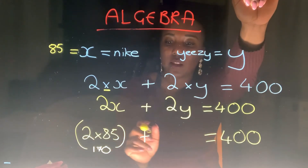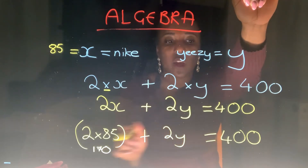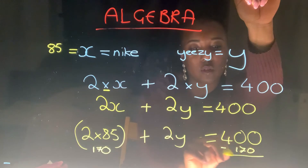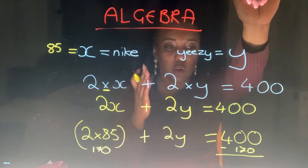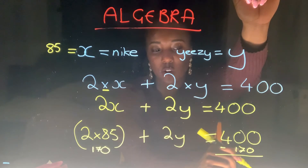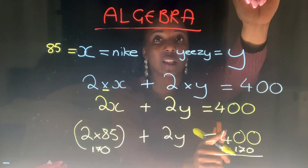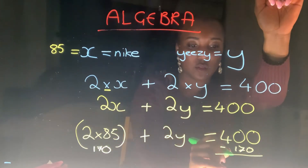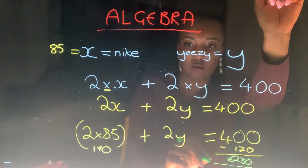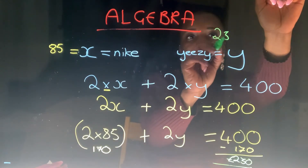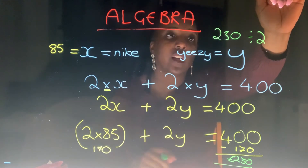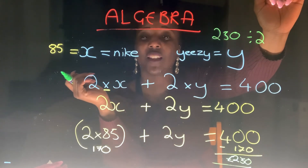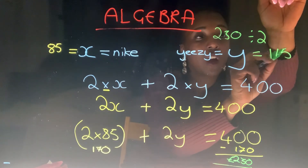And then I've got 2Y over here. So if I take 400 take away 170, what am I left with? 100 away from 400 gives me 300, then take away 70 from 300, I'm left with 230 pounds. So my Yeezys cost 230 divided by 2. 200 divided by 2 is 100, and 30 divided by 2 is 15, so each pair of Yeezys is equal to 115 pounds.